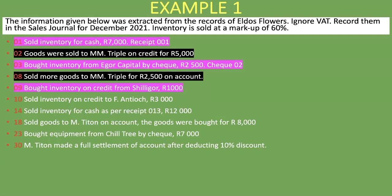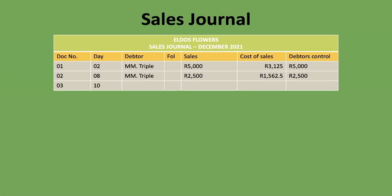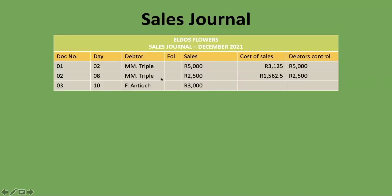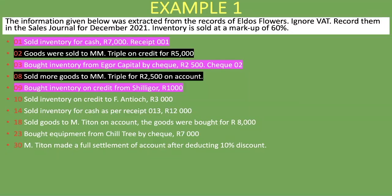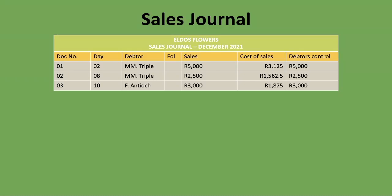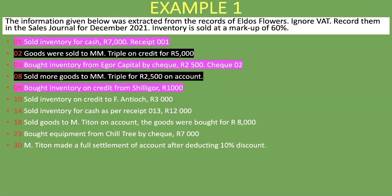On the 10th, we sold inventory on credit to F Antioch for 3,000 Rand. Document number 03, day 10, debtor is F Antioch. Sales and debtors control are both 3,000 Rand. Cost of sales: 3,000 times 100 divided by 160 gives us 1,875 Rand — that's how much it cost us for the inventory sold for 3,000.